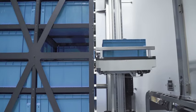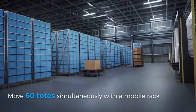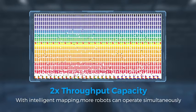Poppik increases transportation efficiency four-fold and can move 60 totes in one go. Intelligent mapping enables more robots to operate simultaneously and doubles the throughput capacity.